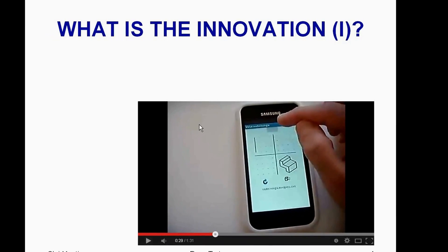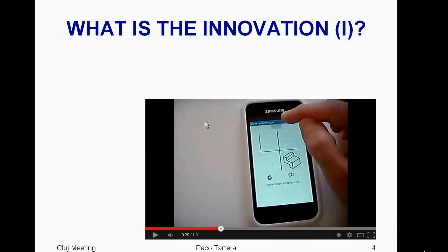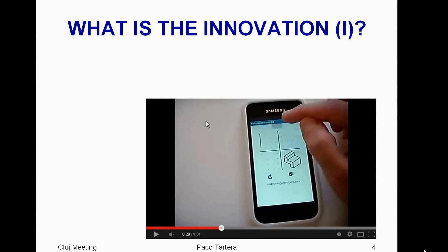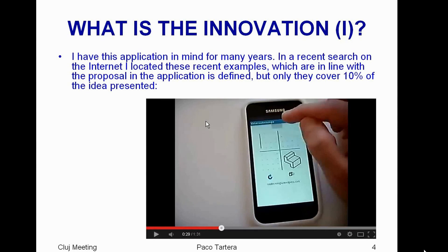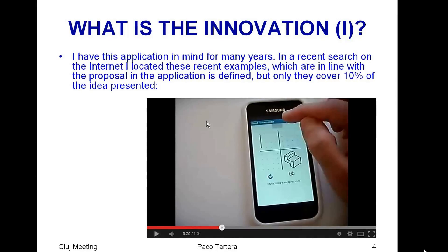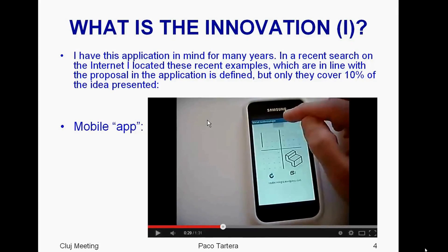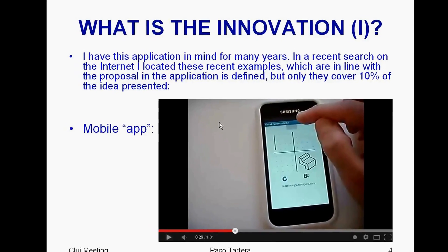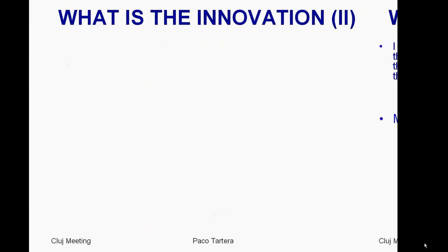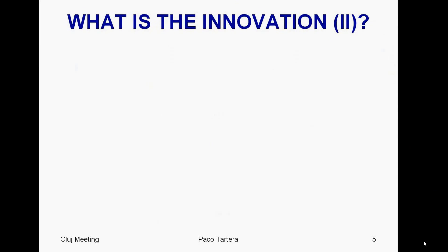From the age of 12, at the start of high school, students are being introduced to perspectives — for example, the representation of objects in the plane. Since this topic becomes repetitive and constant along the academic life of a student, it is also a matter of upper secondary school and university.